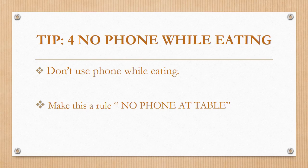Tip number four is no phone while eating. We have to make a rule that no phone at the table. When we sit at the table, we won't touch our phone, and we won't use the phone when we eat anything — whether it is breakfast, lunch, or dinner. Automatically, phone usage will be reduced, and this will become our habit to focus on our food during meal time, not on our phone.